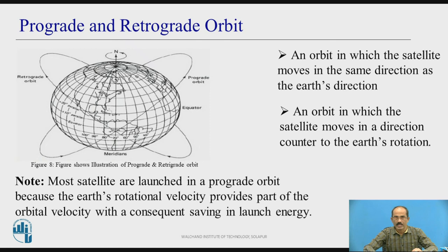Prograde and retrograde orbits: A prograde orbit is one in which the satellite moves in the same direction as the earth's rotation. A retrograde orbit is one in which the satellite moves in a direction counter to the earth's rotation. Please note that most satellites are launched in a prograde orbit, because the earth's rotational velocity provides part of the orbital velocity with a consequent saving in launch energy.